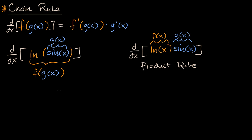The next misconception students have is that even if they recognize they need to use the chain rule, sometimes it doesn't go fully to completion. The chain rule says we have to take the derivative of the outer function with respect to the inner function. So f(x) is natural log of x, and f(g(x)) is this expression. For this first part, f'(g(x)):